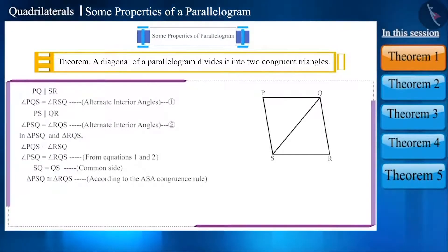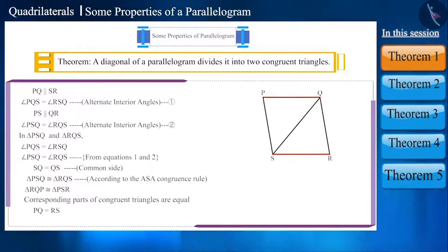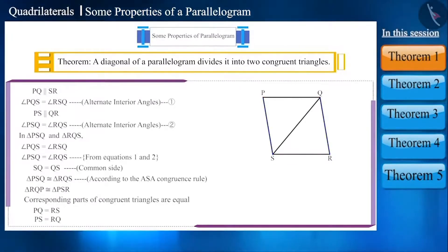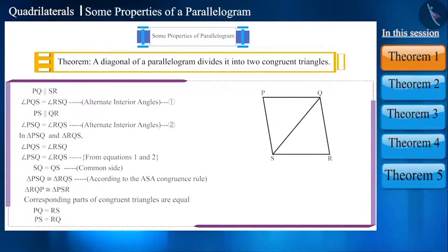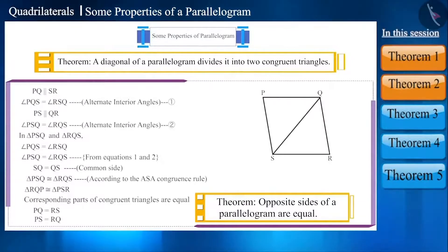Since corresponding parts of congruent triangles are equal, side PQ equals side RS and side PS equals side RQ. Note that these are opposite sides of the parallelogram. This is another theorem: the opposite sides of a parallelogram are equal. Will the converse also be true? That is, if each pair of opposite sides of a quadrilateral is equal, then will that quadrilateral be a parallelogram?